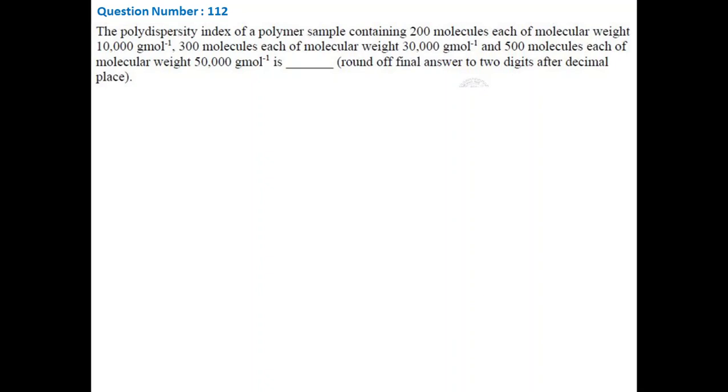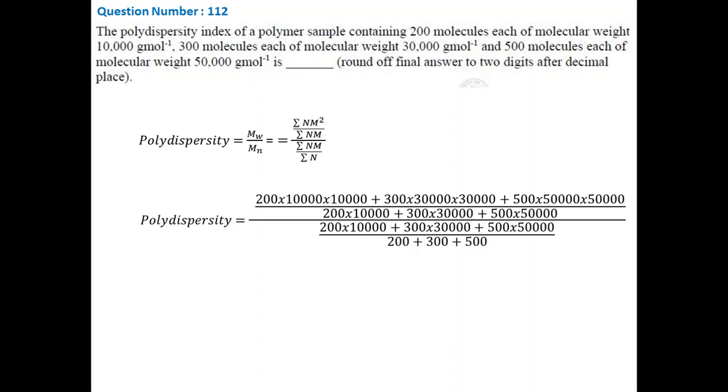The polydispersity value can be calculated by dividing the weight average molecular weight by number average molecular weight of the polymer. The formula to calculate weight and number average molecular weight is shown here. So we can simply put the given values of number of chains and their respective molecular weight to calculate the MW and MN. After simplification, we find that the ratio of MW and MN is 1.19, and that is the polydispersity of the polymer.